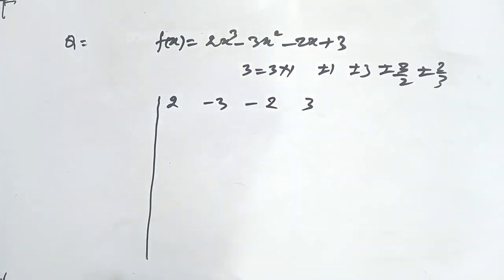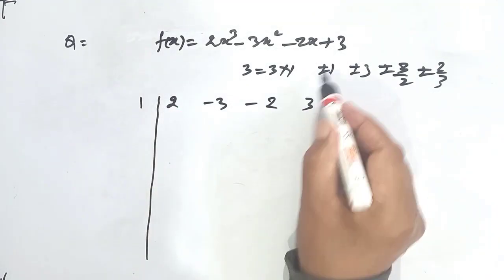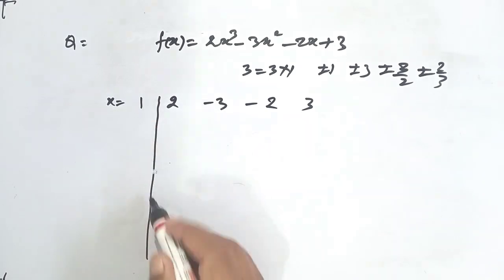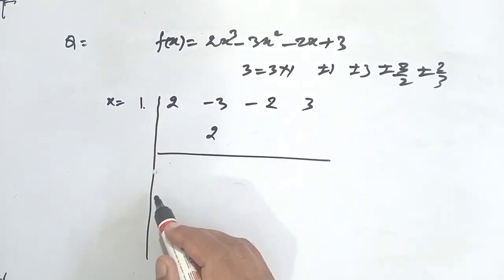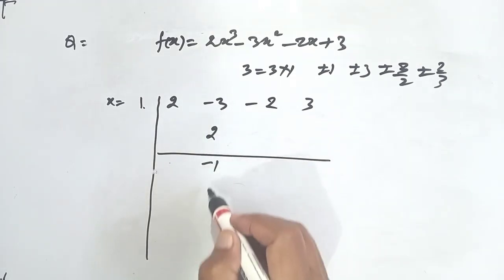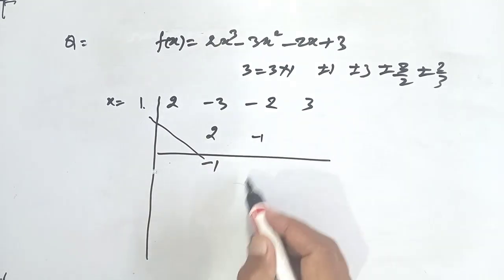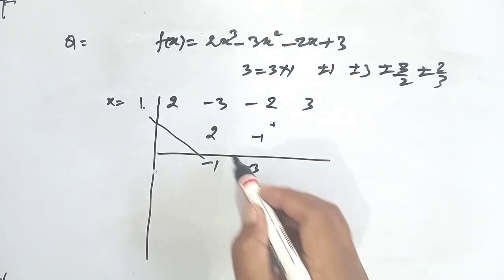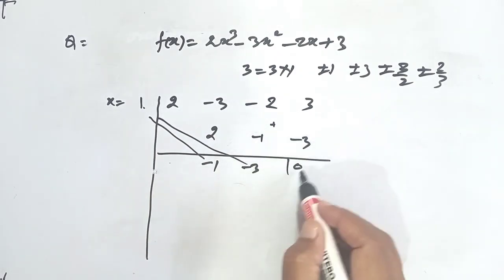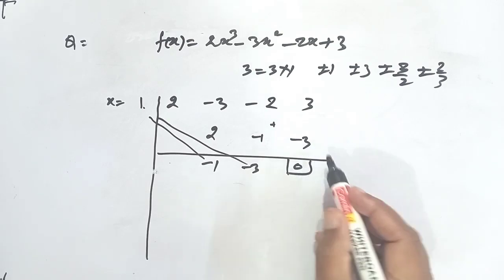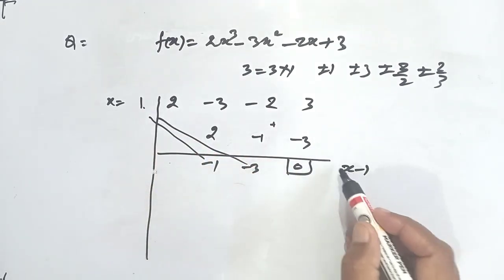We try x = 1: bring down 2, multiply by 1 to get 2, add to -3 to get -1, multiply -1 by 1 to get -1, add to -2 to get -3, multiply -3 by 1 to get -3, add to 3 to get 0. The remainder is 0, which means (x - 1) is a factor. The maximum power is 3, so there can be at most 3 linear factors.